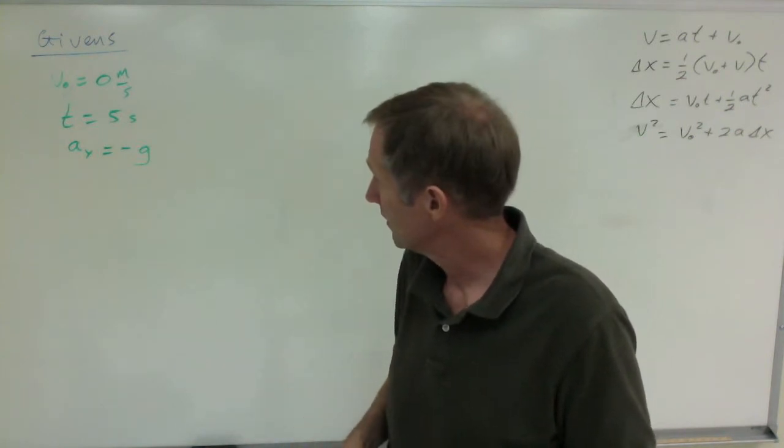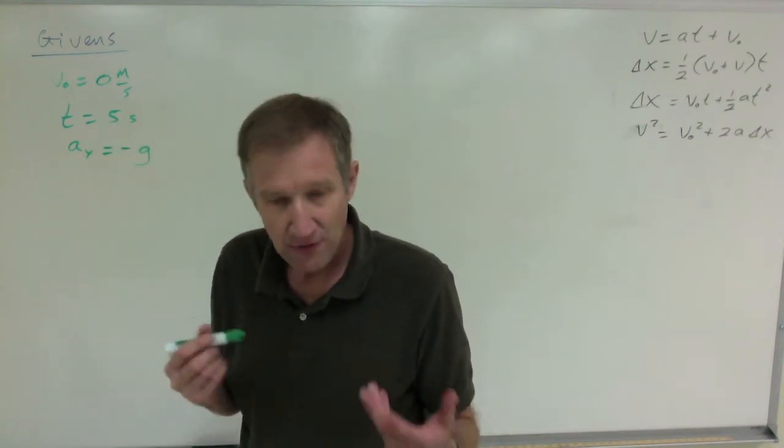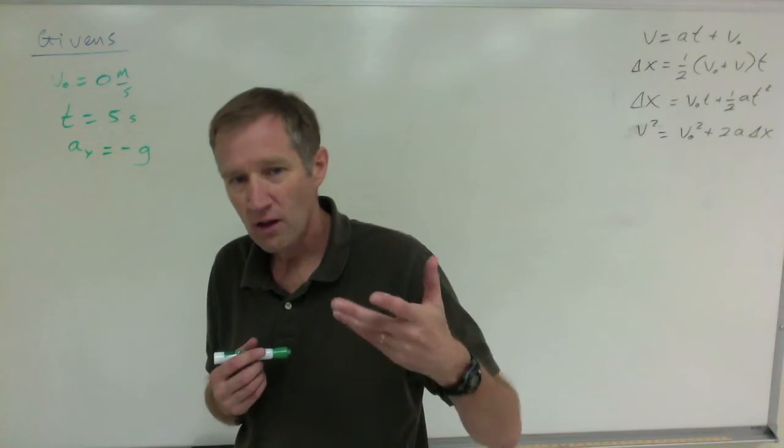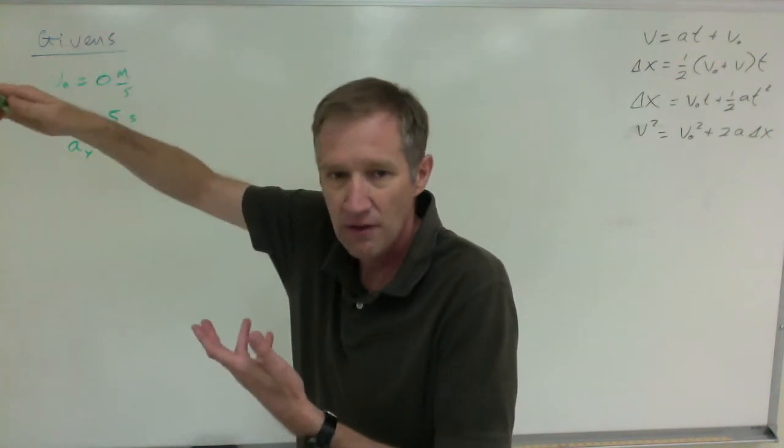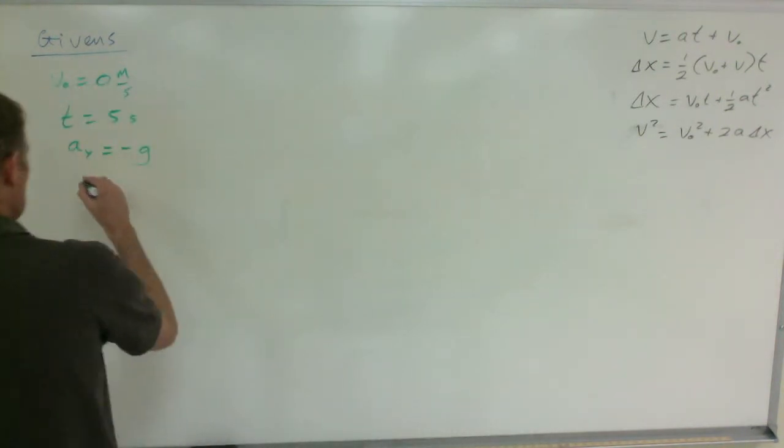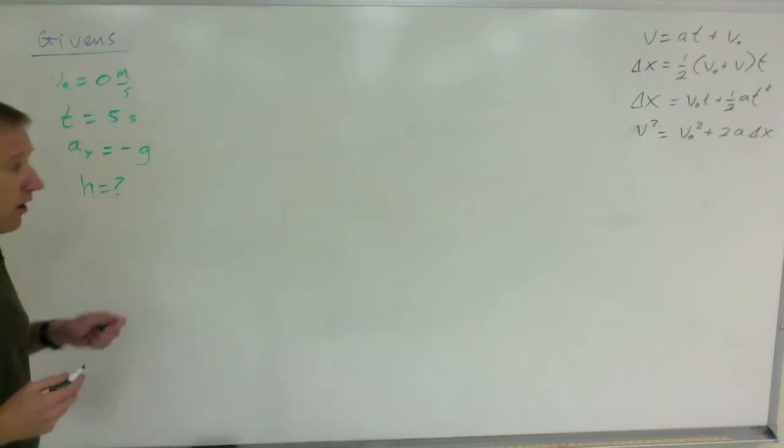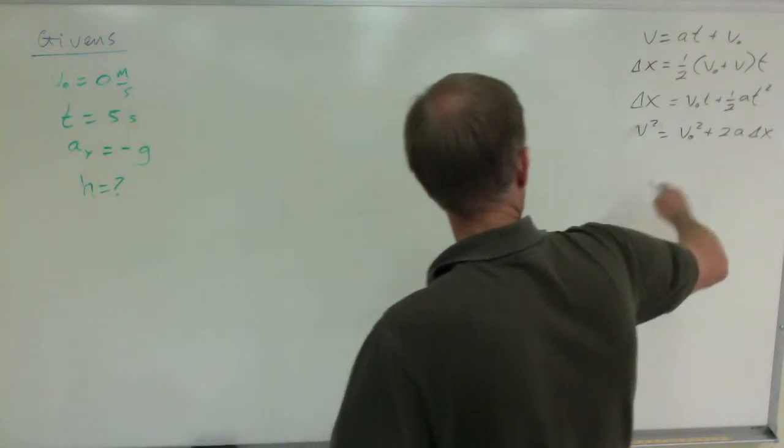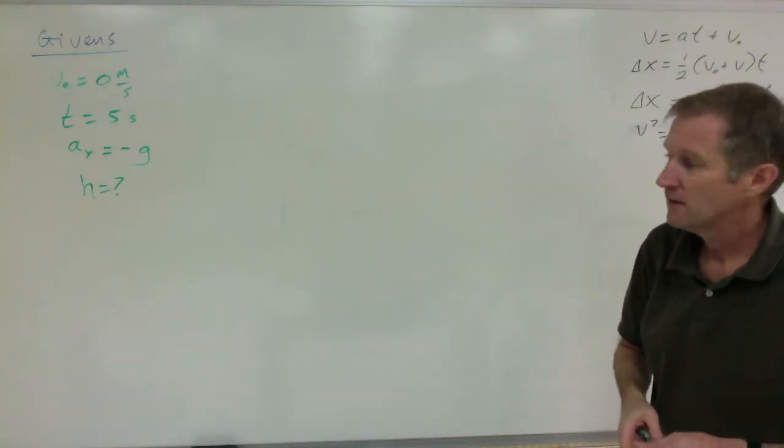We are looking for the height from which it's released. These variables here are not about the height of the platform it's released from. These are about the object that falls. Look at these equations over here - there is no equation that has H in it.